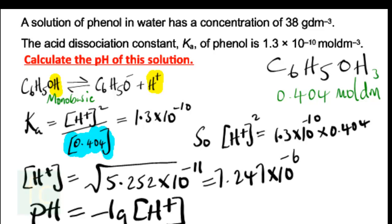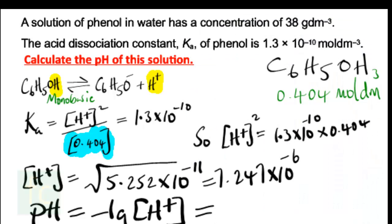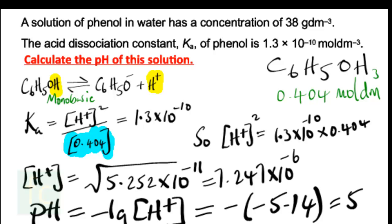Now that we have the concentration of hydrogen ions, we can find the pH. The pH is the negative log of the hydrogen ion concentration — taking the log of 7.25×10⁻⁶ gives minus 5.14, and the negative log is minus minus 5.14, which is 5.14. So the pH of the phenol solution is 5.14 — quite high, as expected from the very small Ka value.